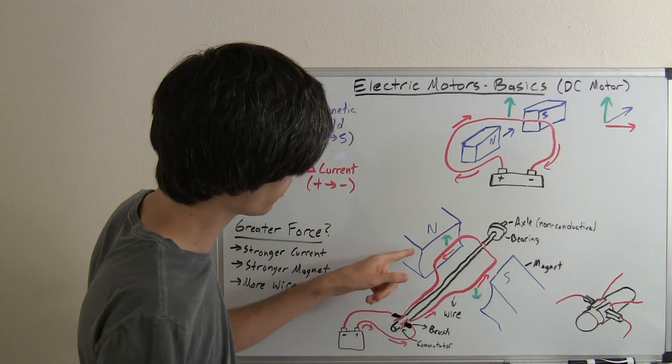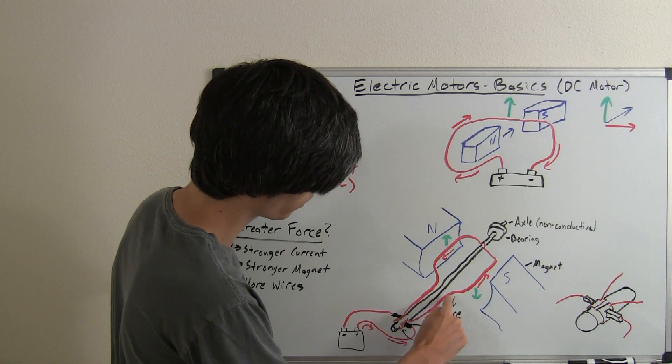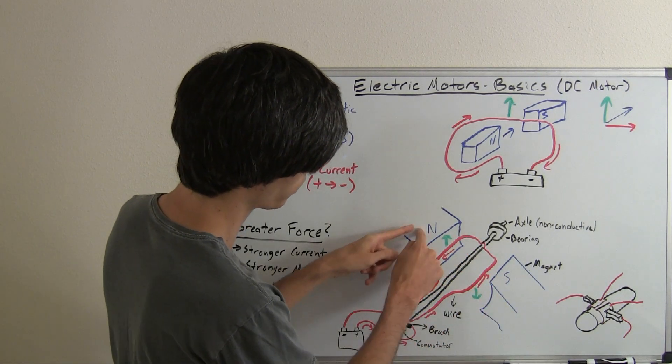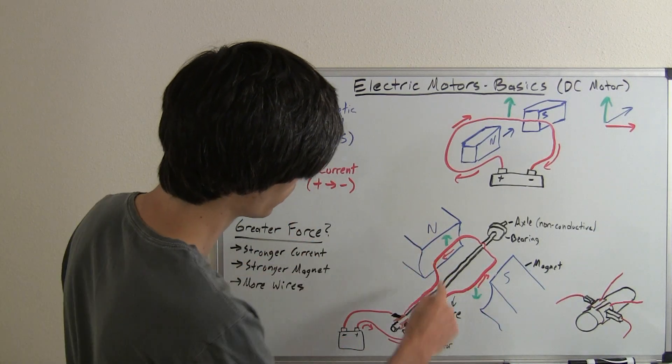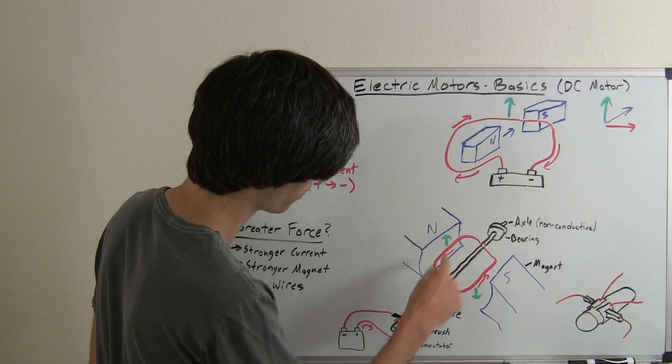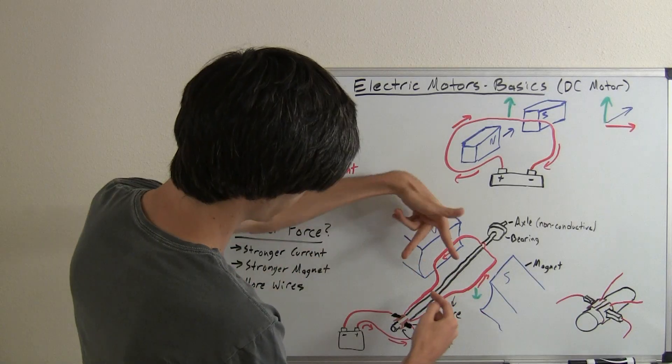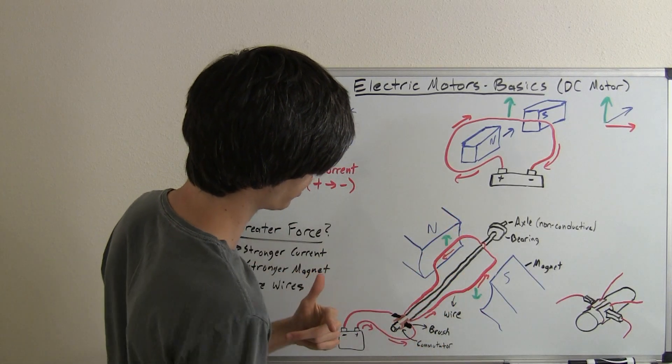So what we've got going on is here's the plus side of your battery and the negative side. You've got your current flowing through the wire, and then you've got your magnetic field north to south. So just like here, we've got our magnetic field. We can take a look at this wire right here. We've got our magnetic field going from here to here. We've got our current flowing across like that, and so our left-hand rule is going to tell us that that wire is going to go up.